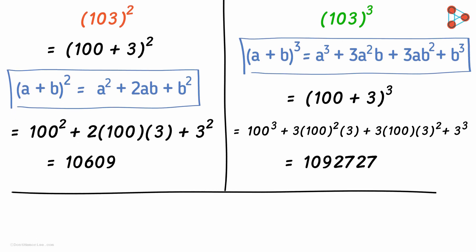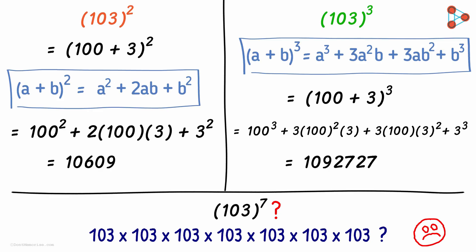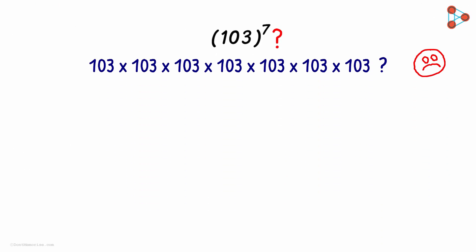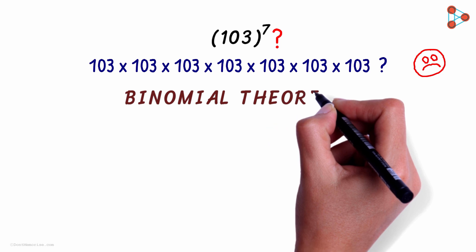These two formulae helped us find the answer easily. But what if it was one hundred and three raised to seven? What do we do now? It's surely not feasible to multiply one hundred and three seven times. So what's the solution then? Do we know any formula for it? We probably don't.